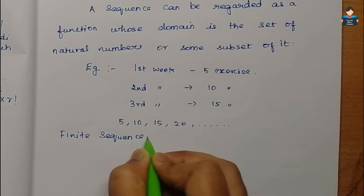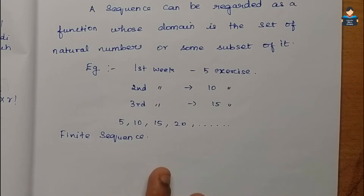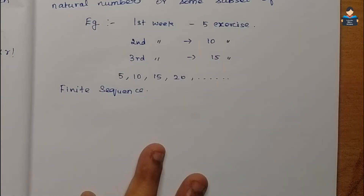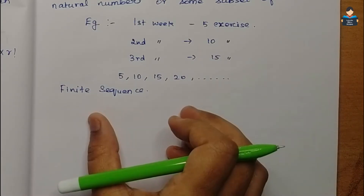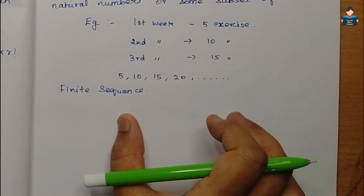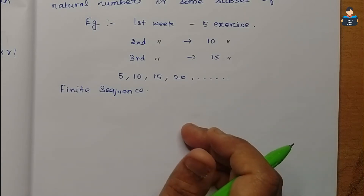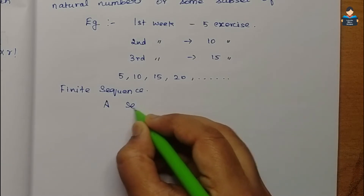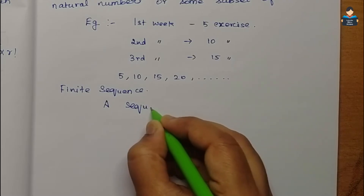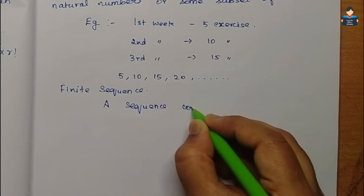A finite sequence is a sequence containing a finite number of terms. That is, if the sequence has a finite number of terms, it is called a finite sequence.